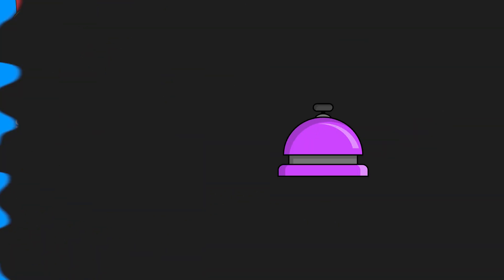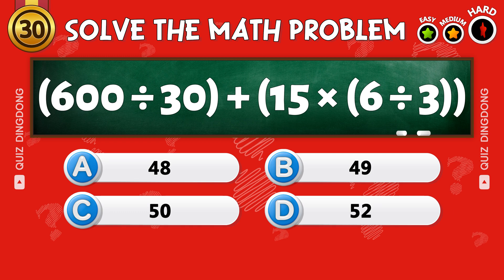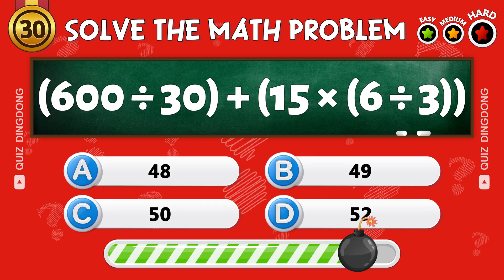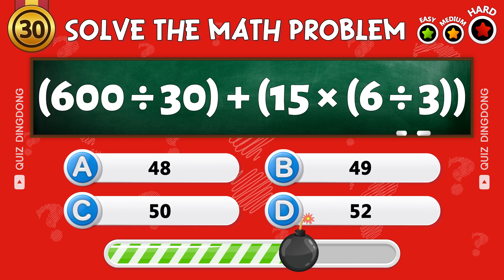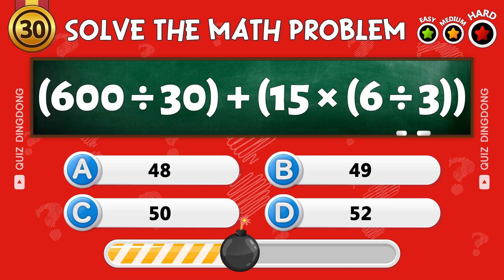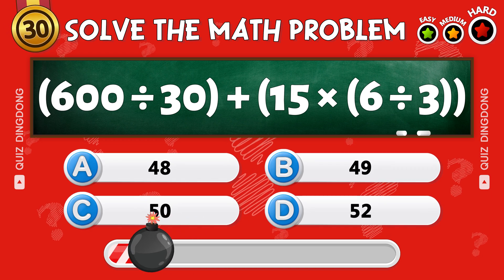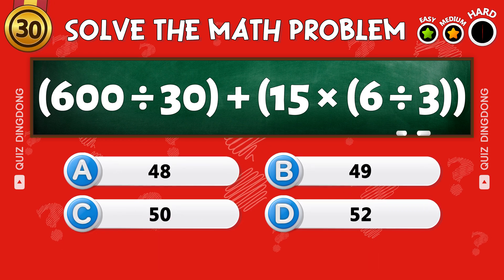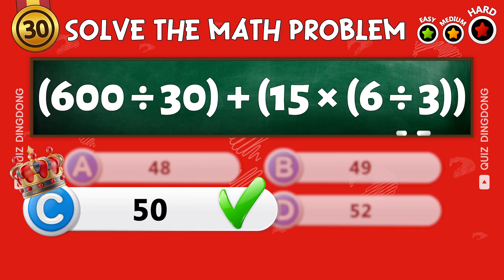Last question! What is 600 divided by 30 plus 15 times 6 divided by 3? Perfect! That's 50!